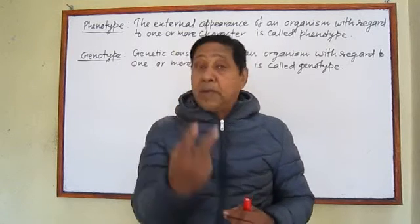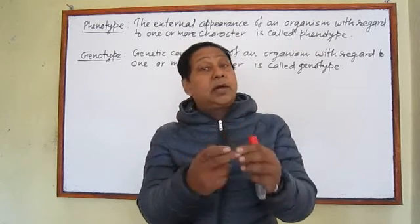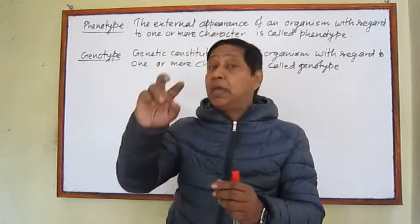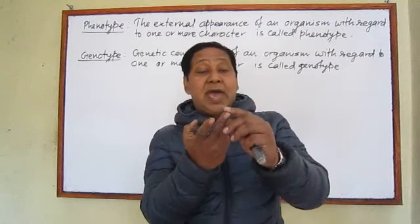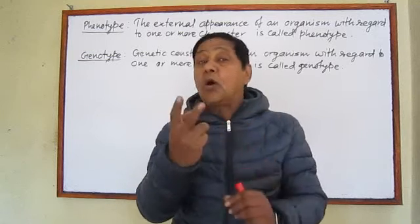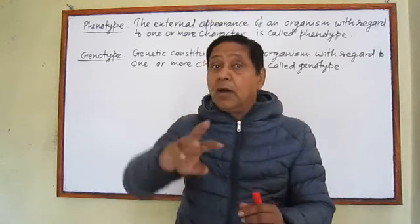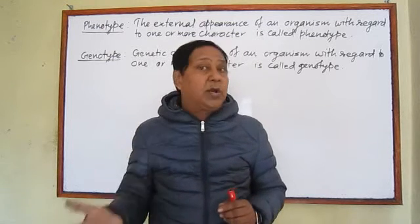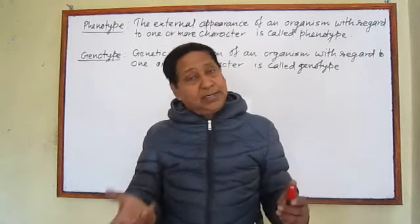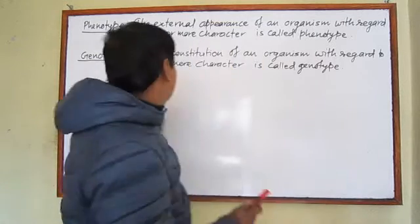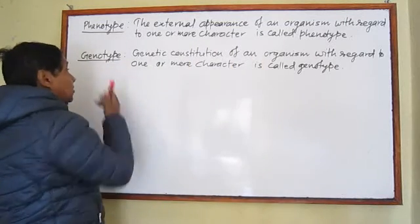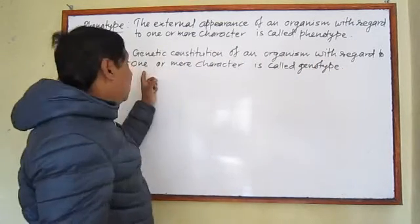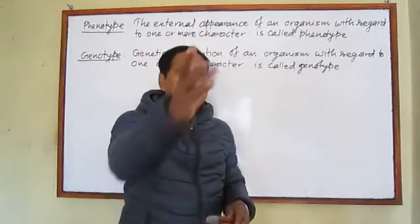Both genes in the pair can have the character of tallness, or both can have the character of dwarfness, or one gene has the character of being tall and the other has the character of being dwarf — all of this comes under genotype. The genetic constitution of an organism with regard to one or more characters is called genotype.